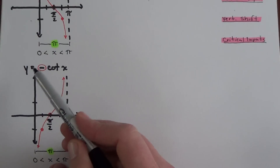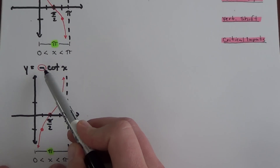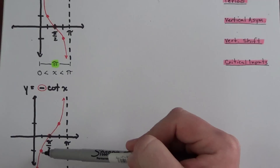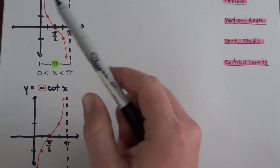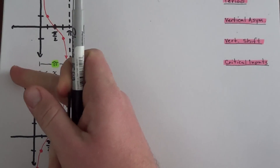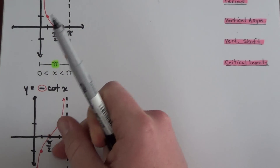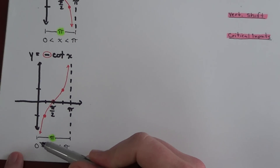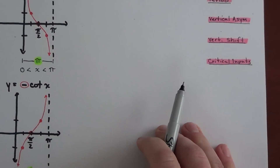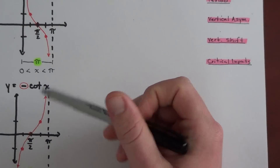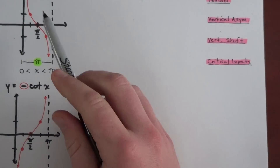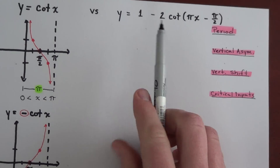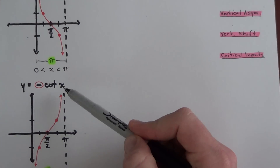If I multiply the entire cotangent function by a negative value, the positive values become negative — it just flips the curve. Picture drawing a crease along the axis and flipping the page down. Nothing changes about the period; it's still a length of pi from zero to pi. Whether your graph goes up or down depends on whether the multiplier is positive or negative — for this function, it's negative.